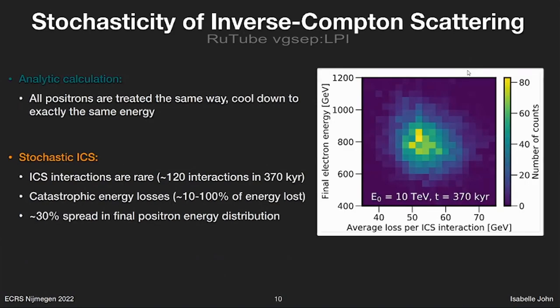In the continuous analytic approximation, all positrons are treated exactly the same way and experience exactly the same cooling, so they all end up at the same final energy. But if we treat inverse Compton scattering stochastically, this is no longer the case. In this plot, we show the final positron energy versus the average energy loss per inverse Compton scattering interaction. All positrons started at 10 TeV and cooled for 370,000 years. We see a spread in energies of about 30%. It also turns out that inverse Compton scattering interactions are quite rare — on average about 120 interactions per positron over 370,000 years.